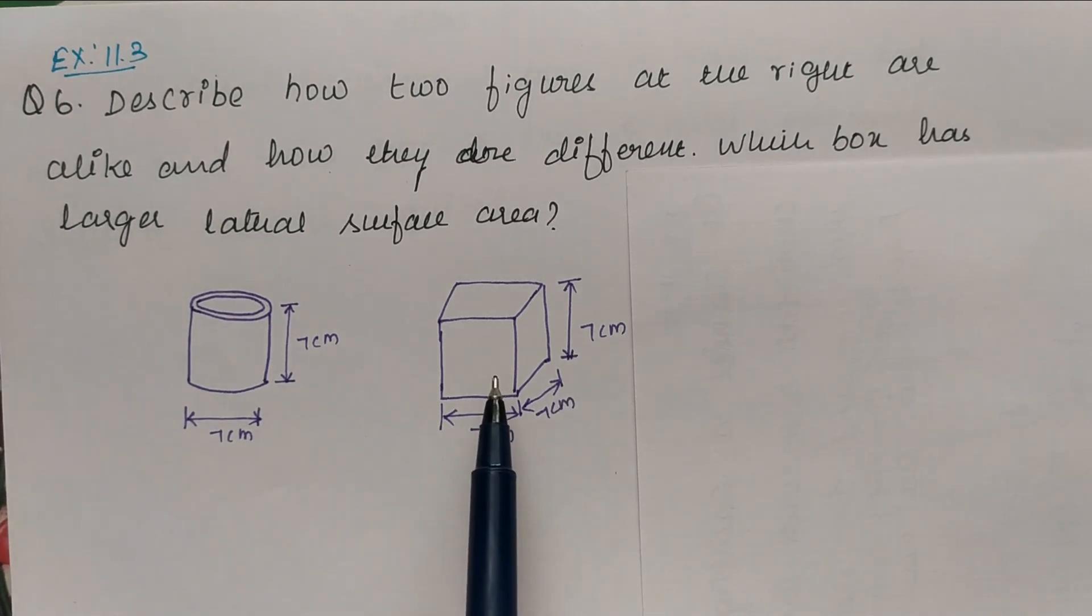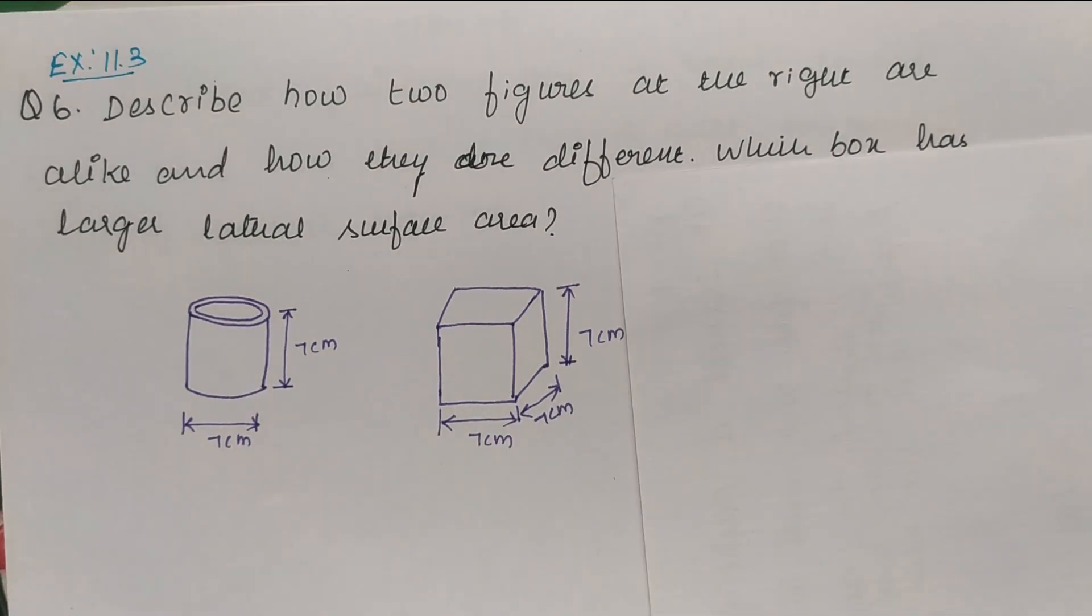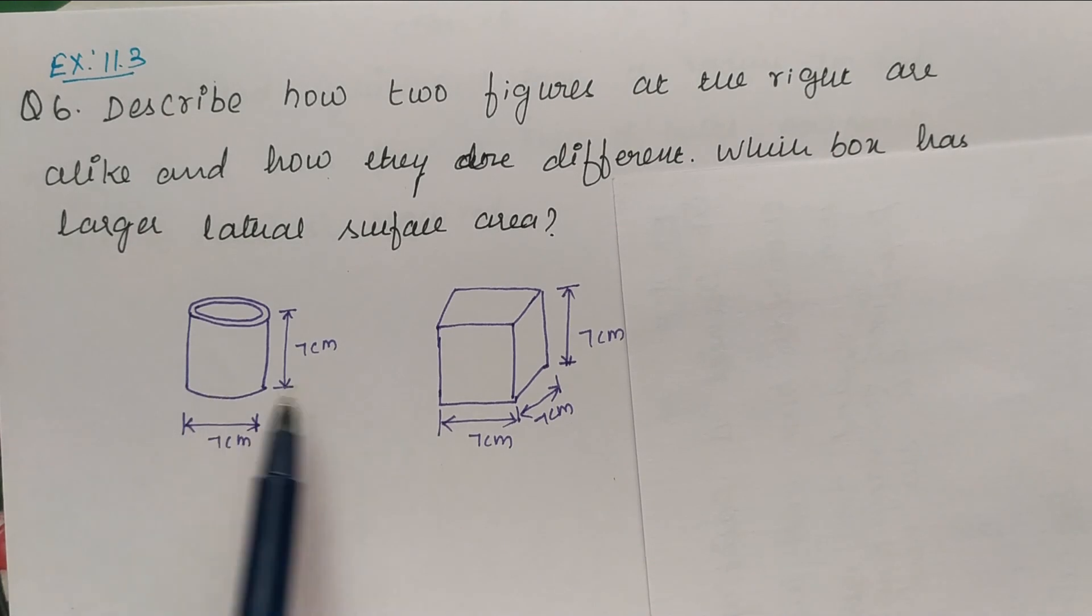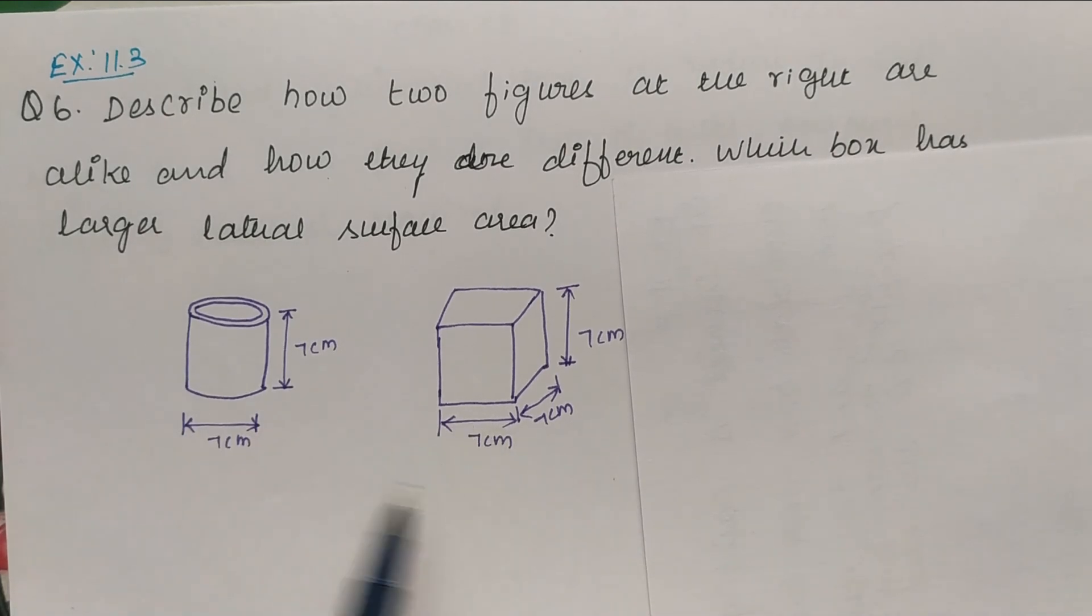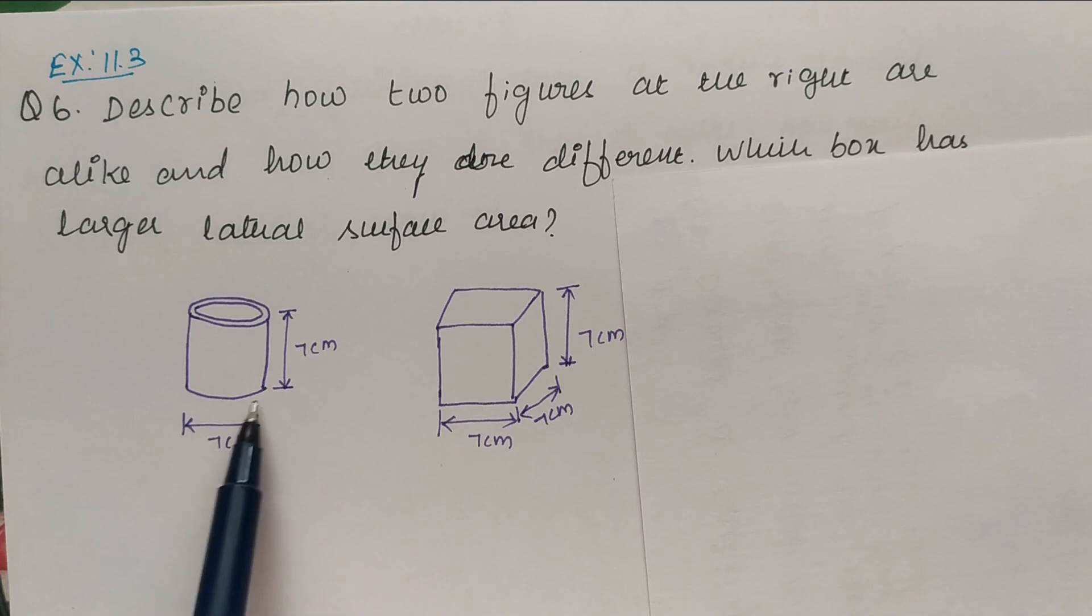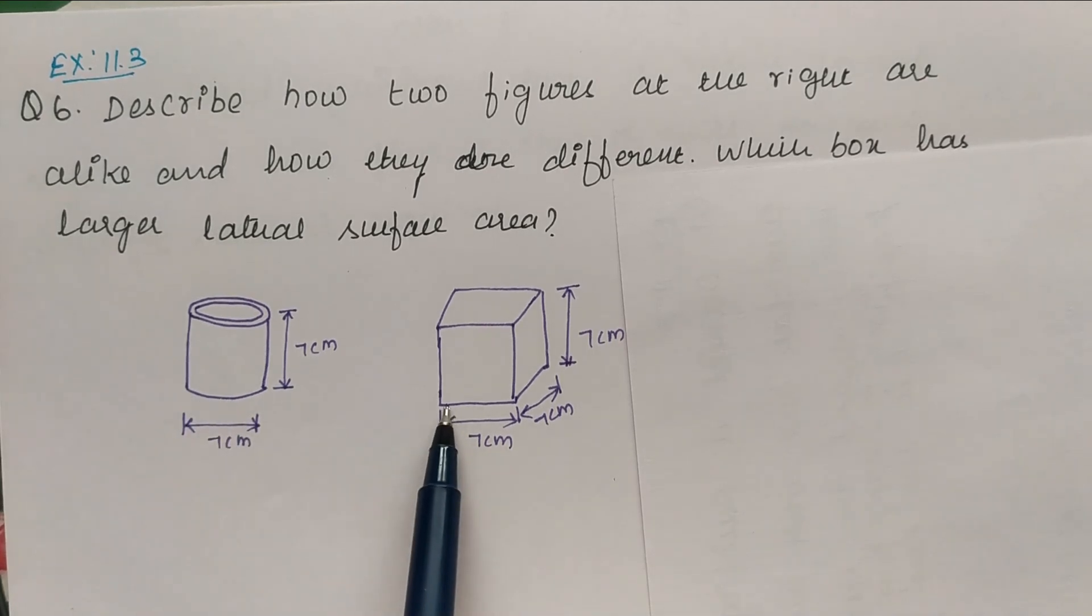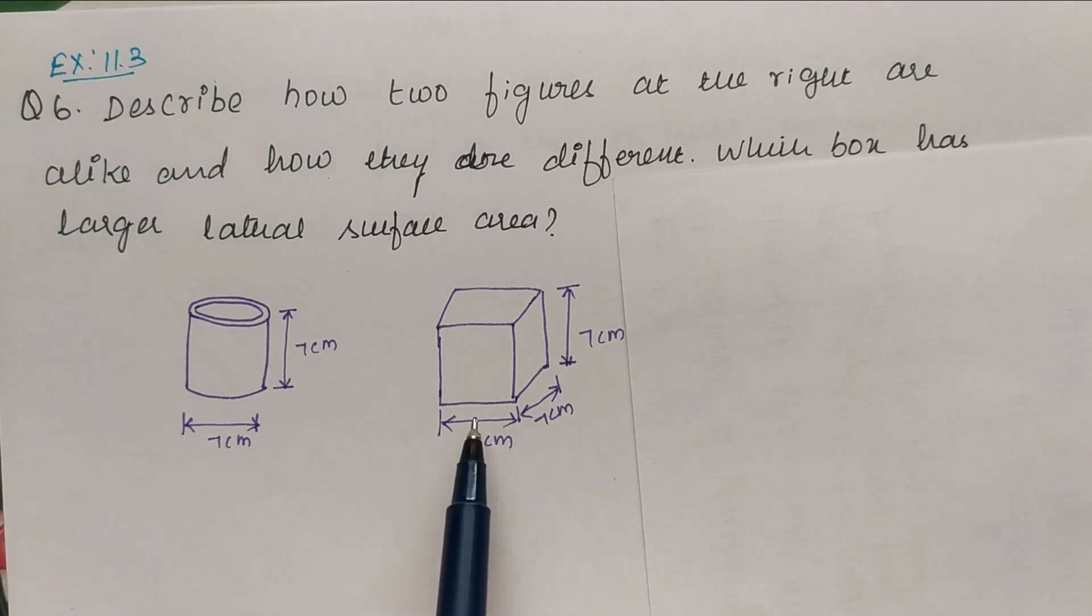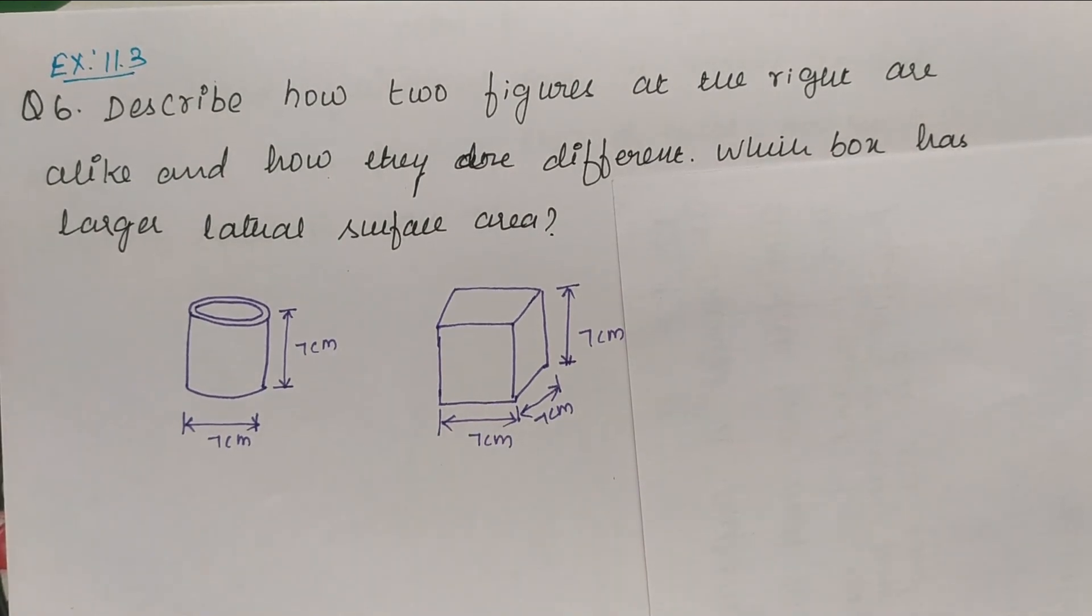Both figures have same height and the differences are one is cylinder and another one is cube. The base of the cylinder is circular base but the base of the cube is square base. This is the difference.